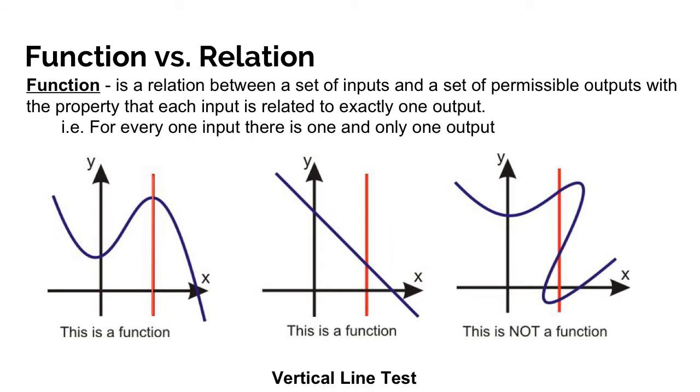Now the vertical line test is what happens if you pass a vertical line through your graph. If it ever touches your graph more than once as you pass it through left to right, that means it is not a function. So that's why the first example is a function.